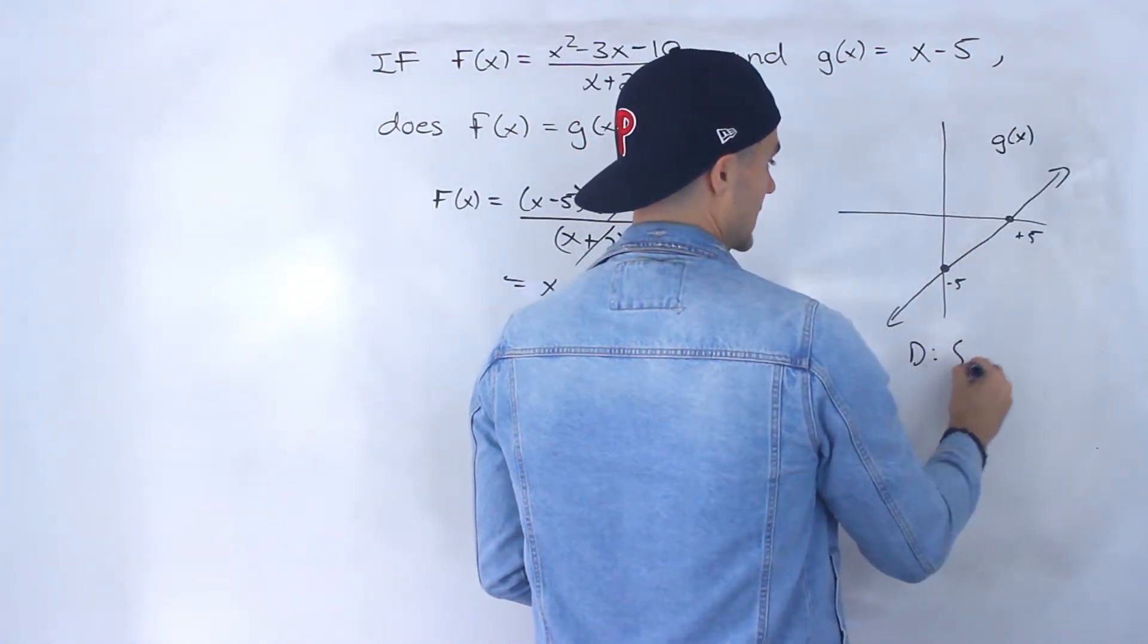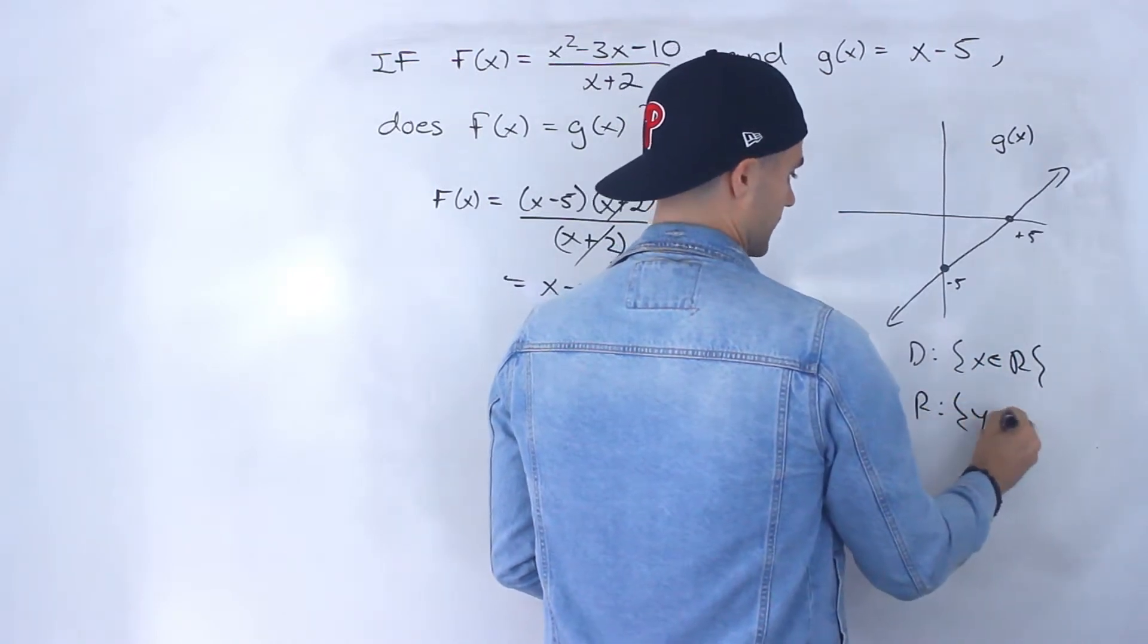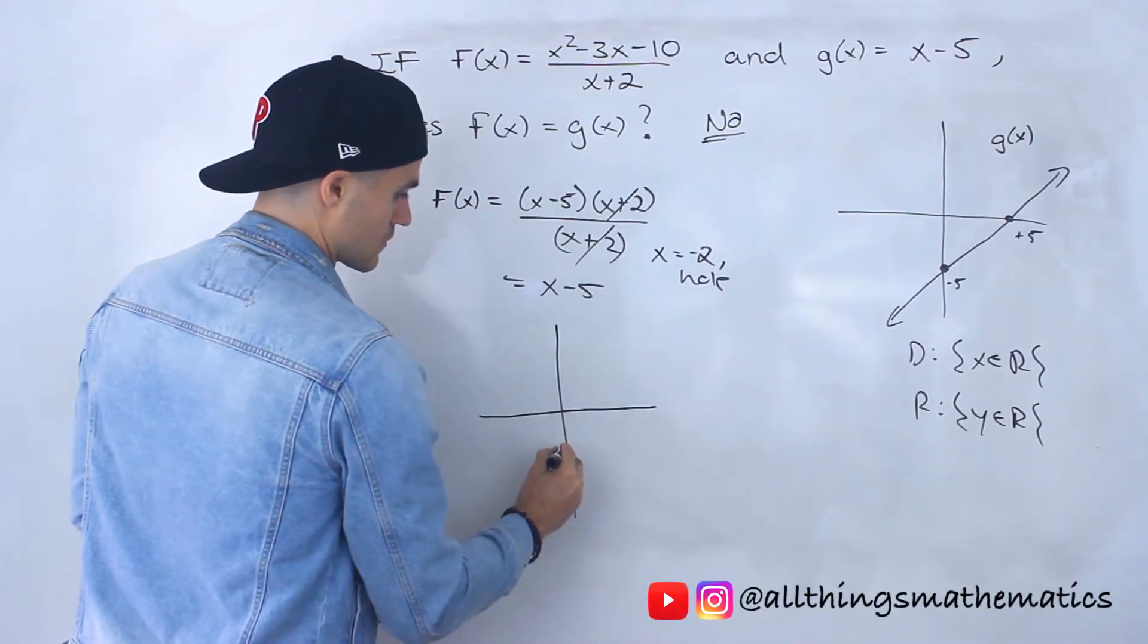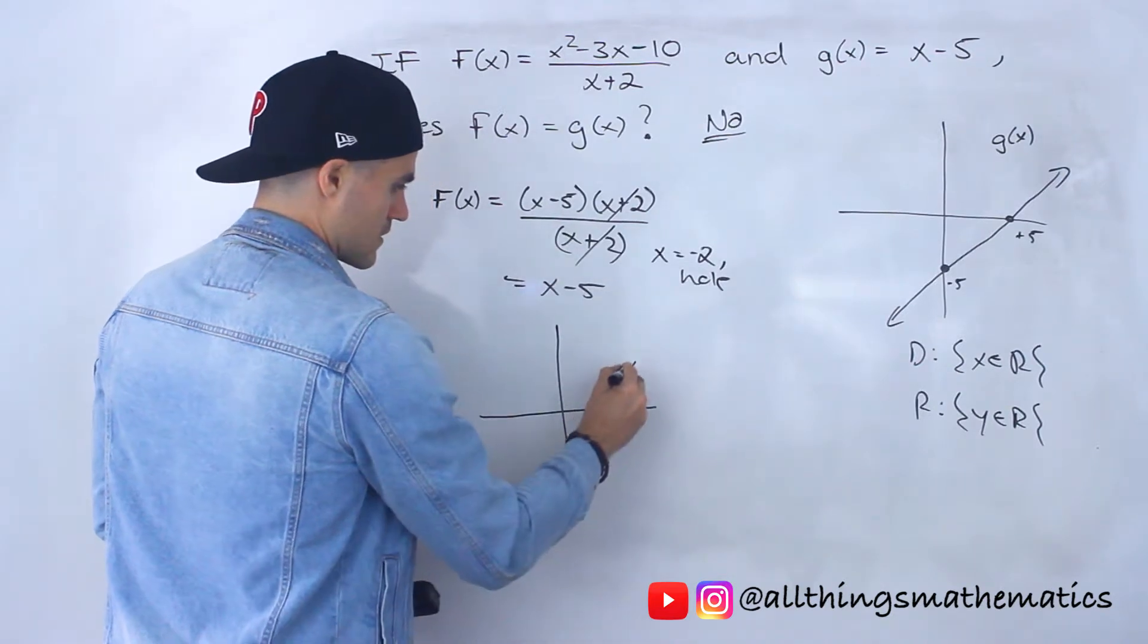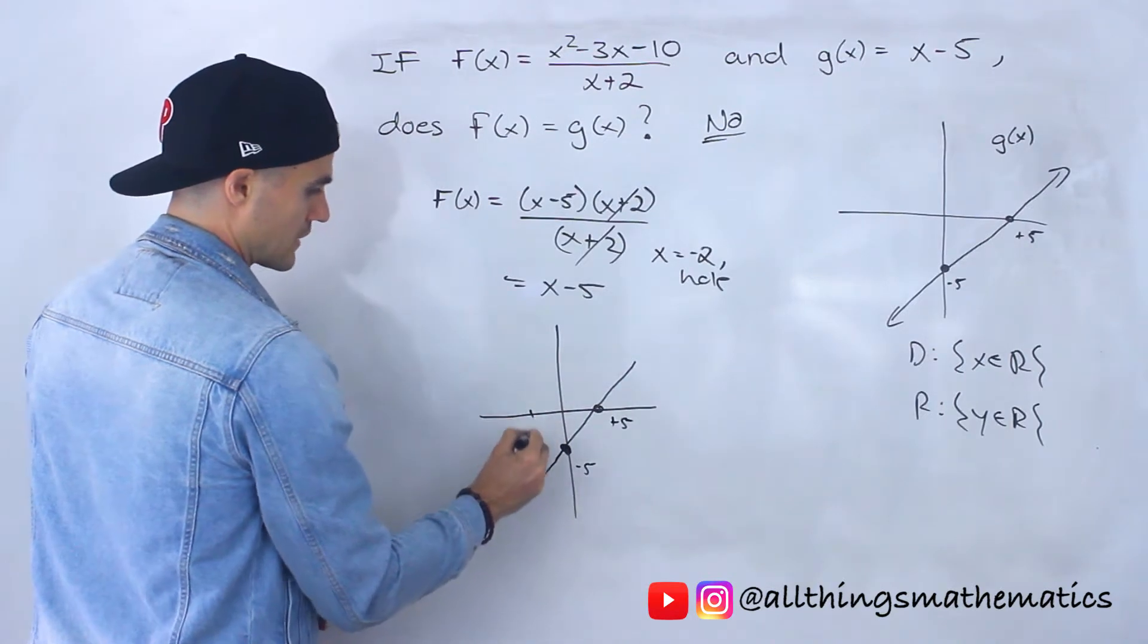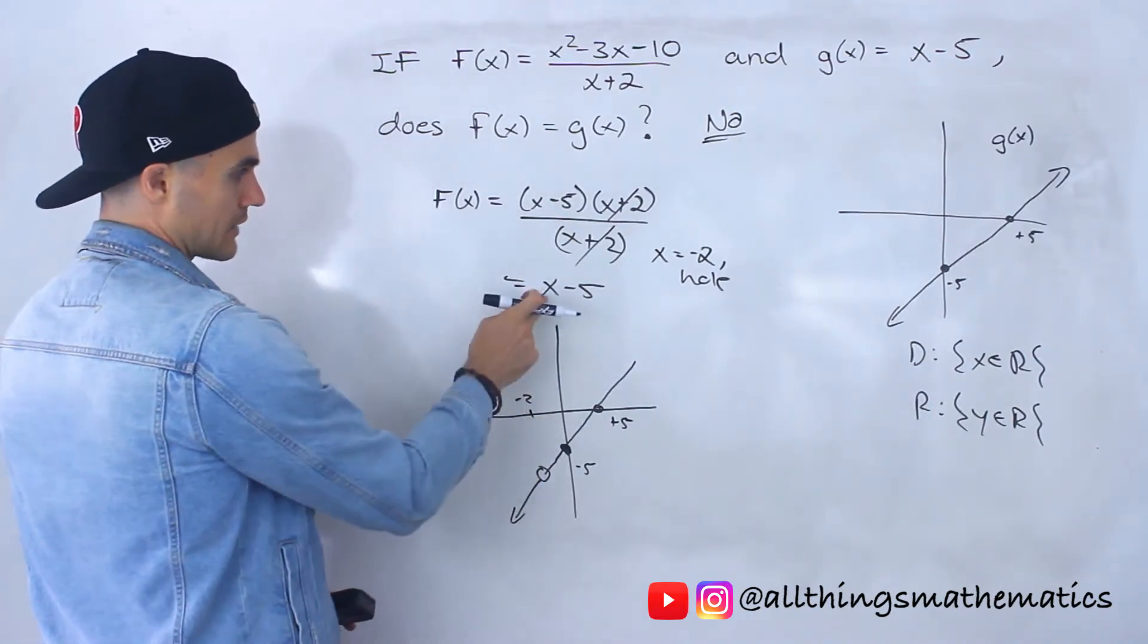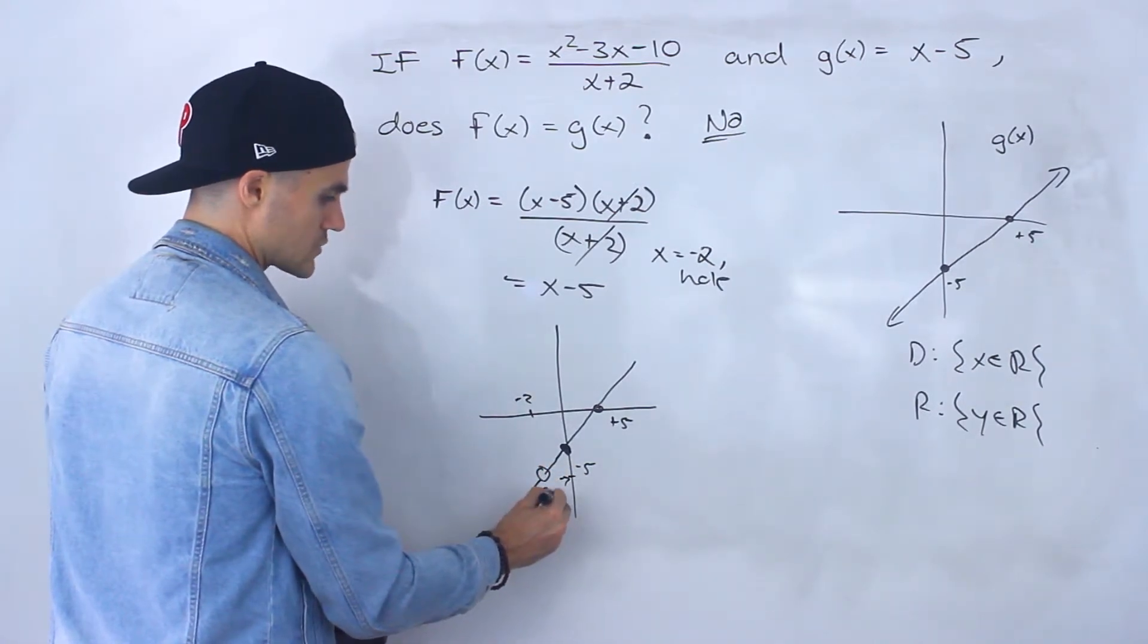But for f(x) here, we would draw that same graph x - 5, with intercepts at -5 and +5. But at that x value of -2, there's going to be a hole right there. And the coordinate of that, if we plug in -2 for x, is at y value -7. So the coordinate of the hole is (-2, -7).